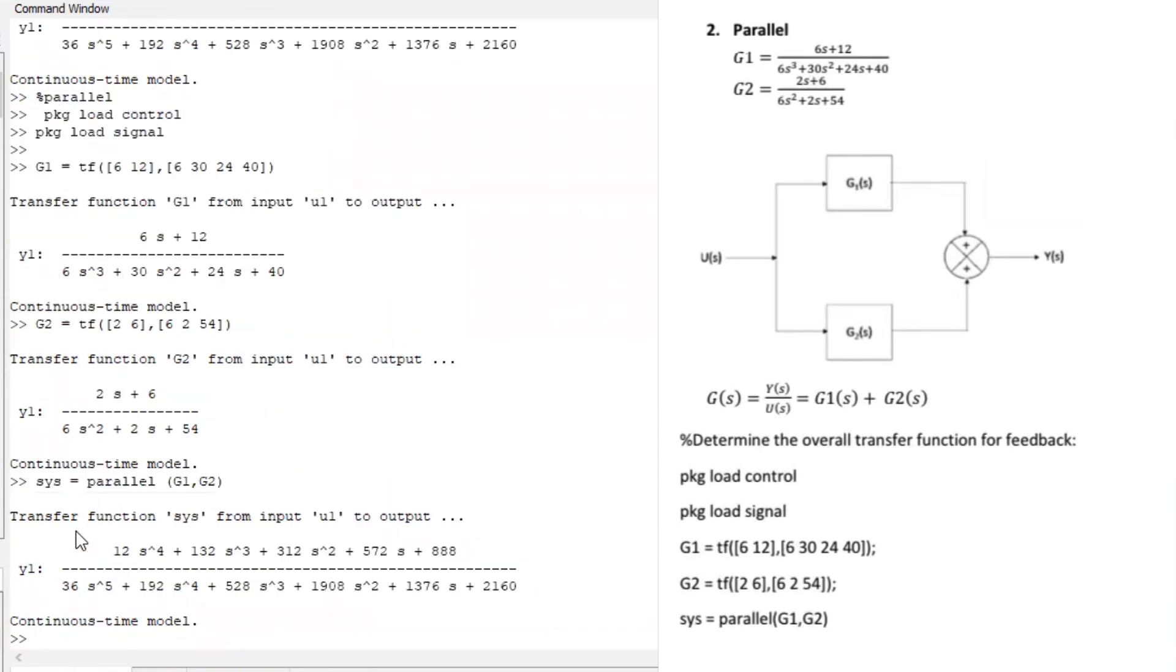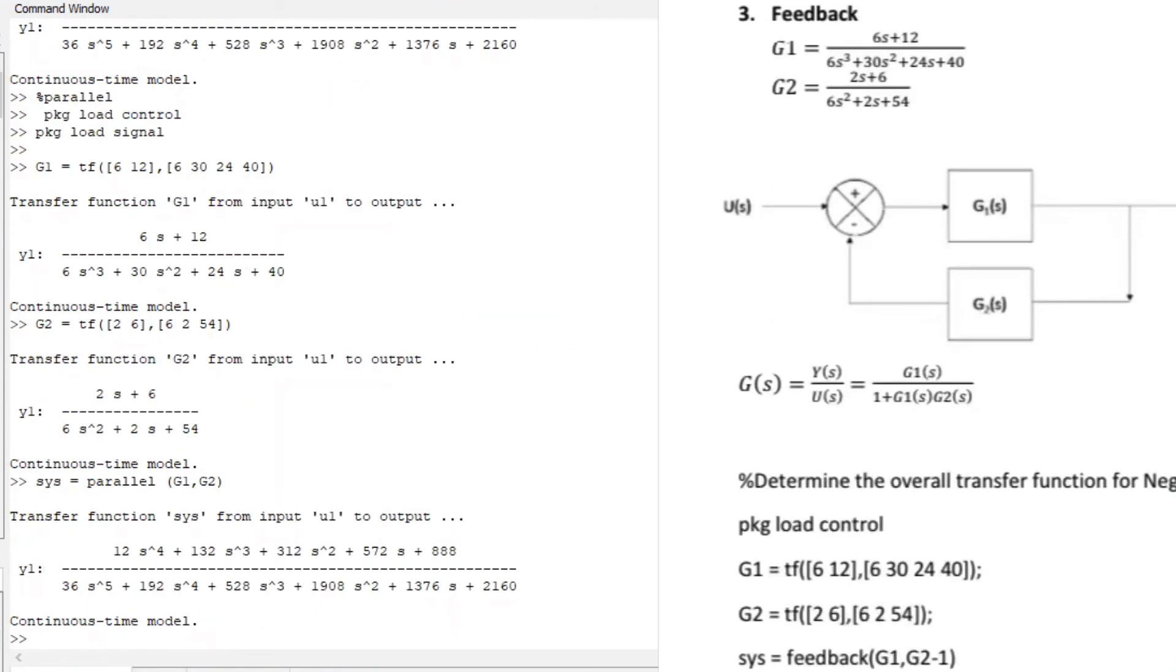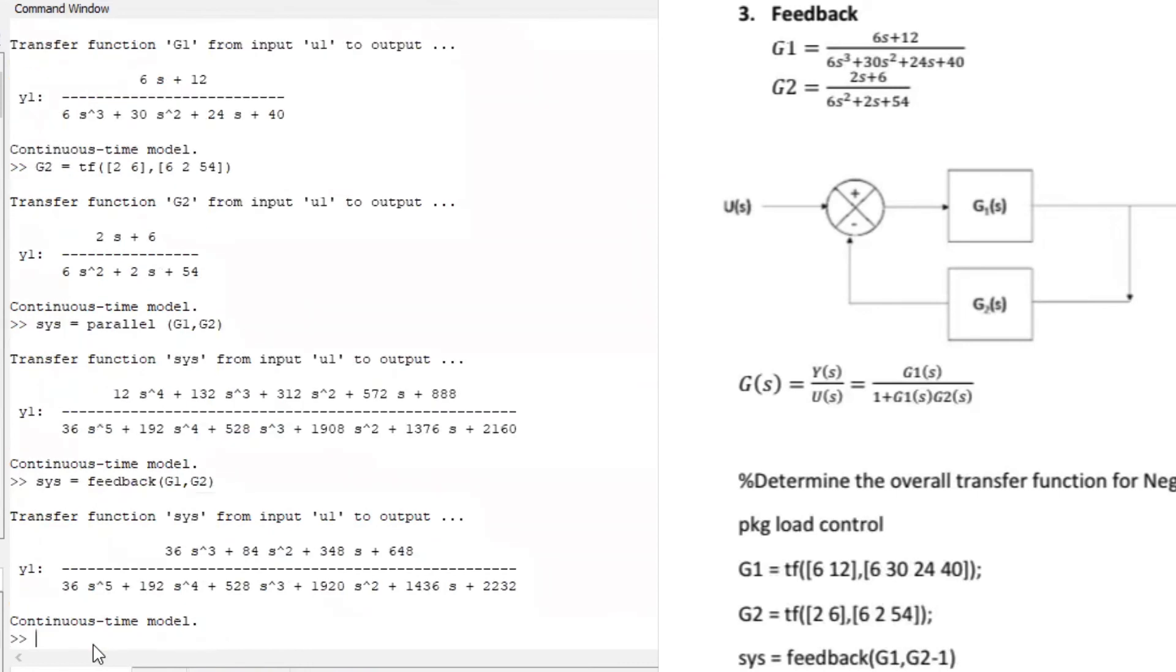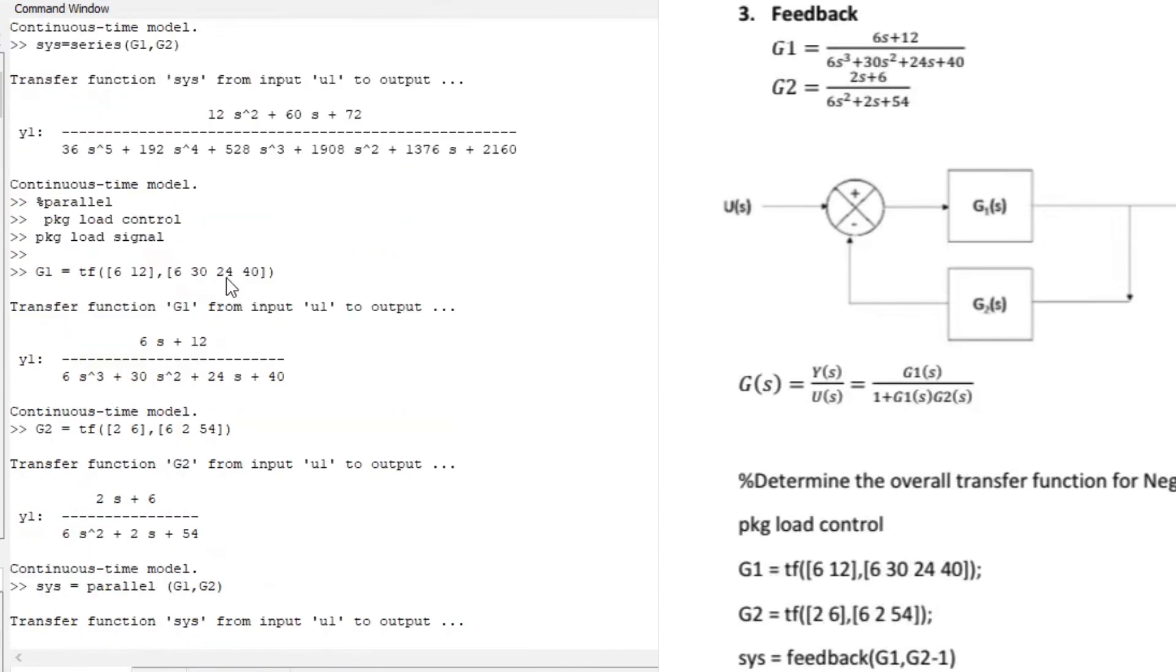Enter. Perfect. So Octave just found the system when it's operating in parallel for you. And what if our system is in a feedback mode? So all you have to do is, I'm just going to assume that you've already computed your control signal with G1 and G2. So I'm just going to say sys...